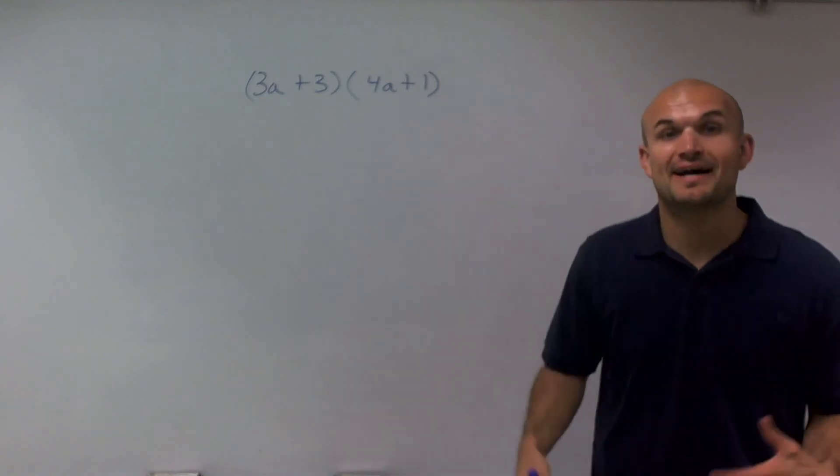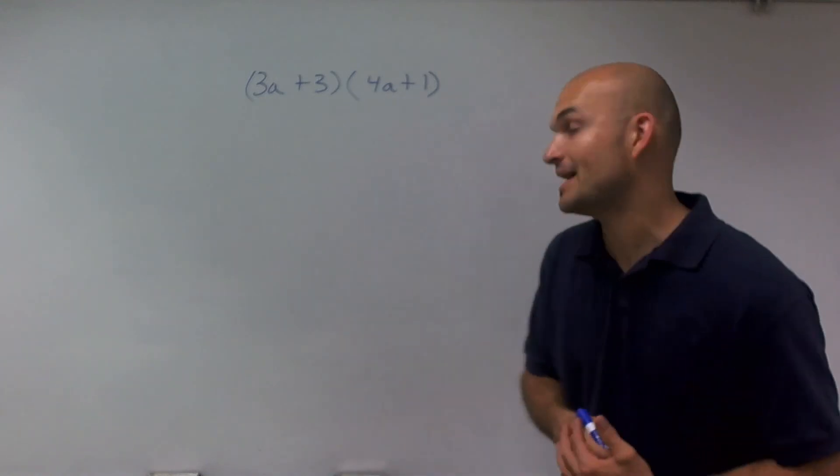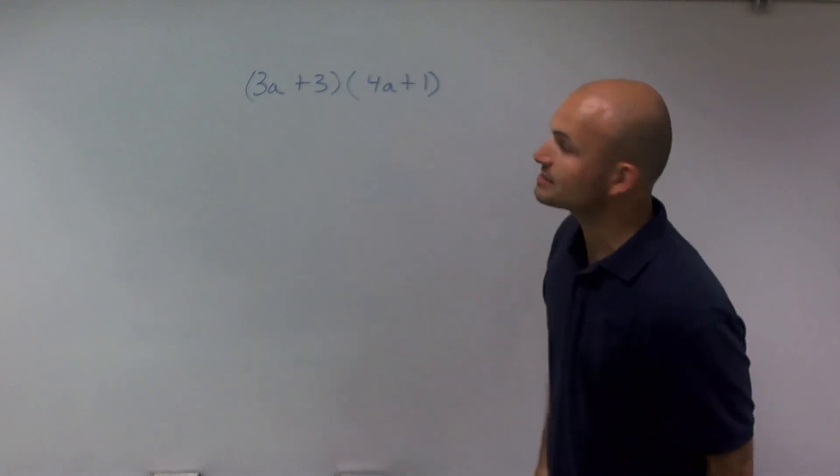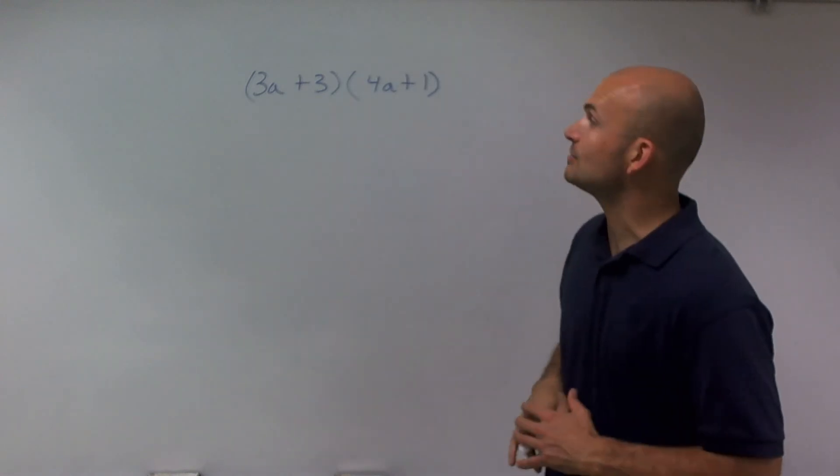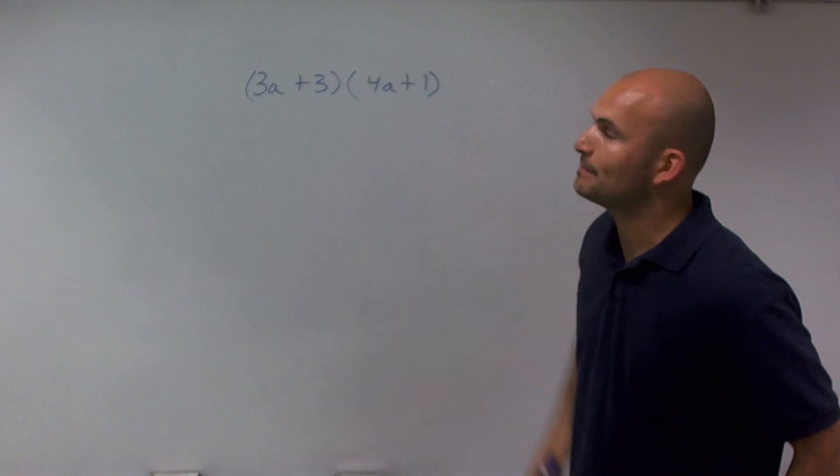Welcome. What I want to do today is show you how to multiply two binomials by each other. So what I have first is my first binomial, which is 3a plus 3, and I'm going to multiply that by 4a plus 1.